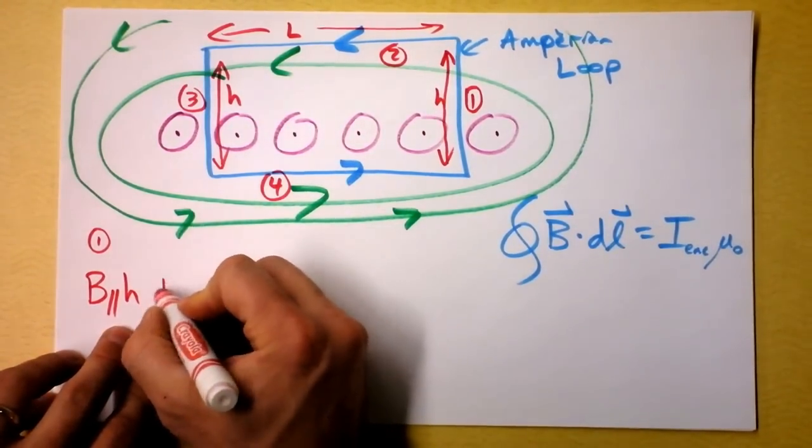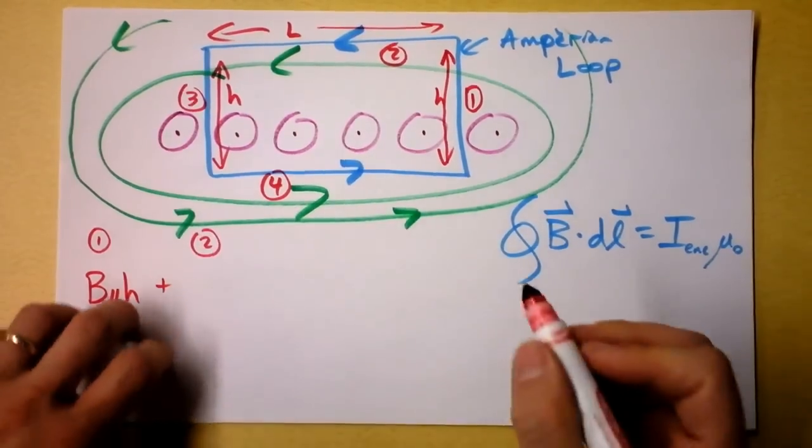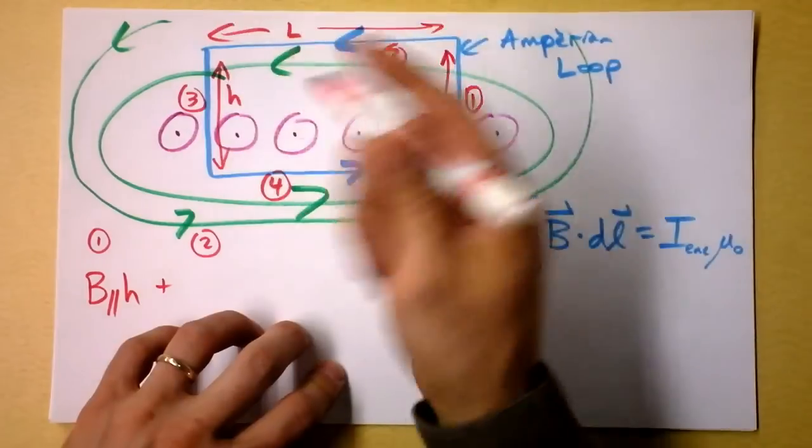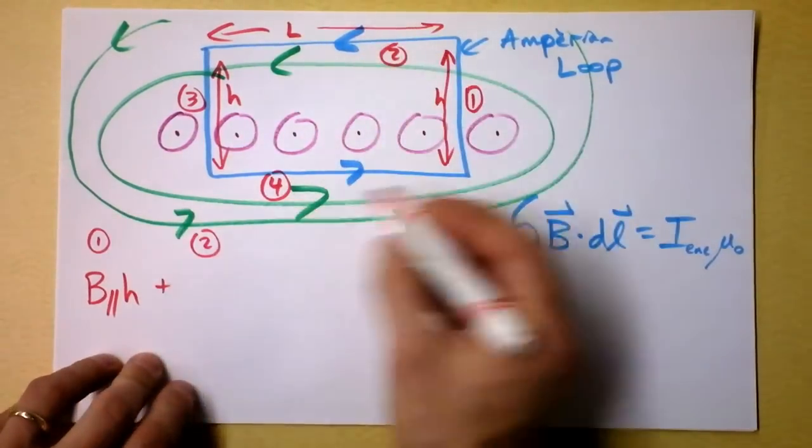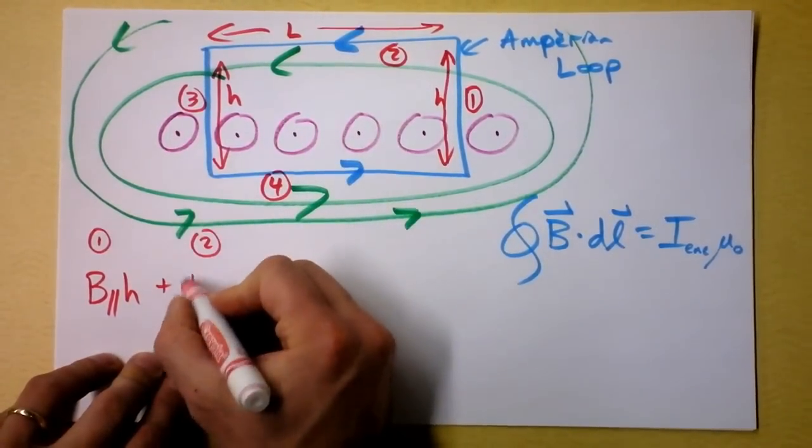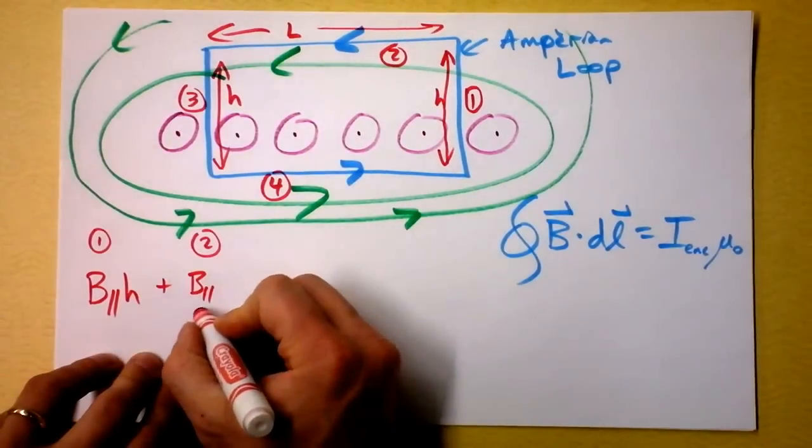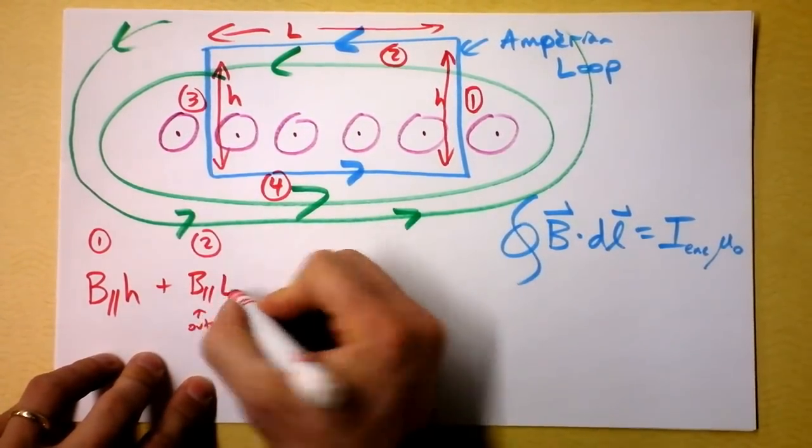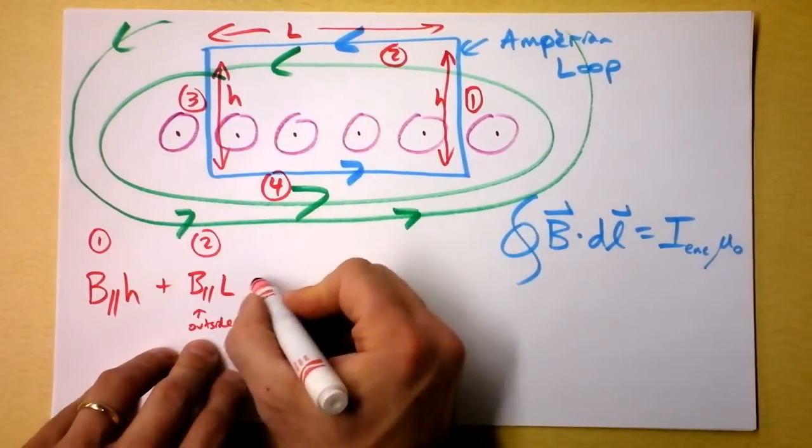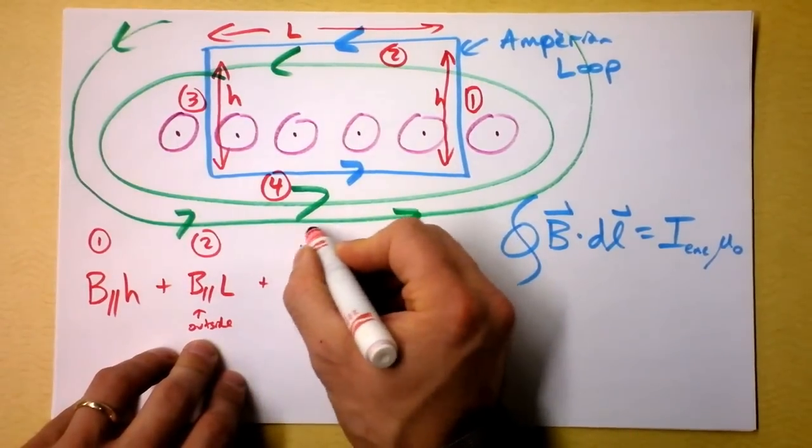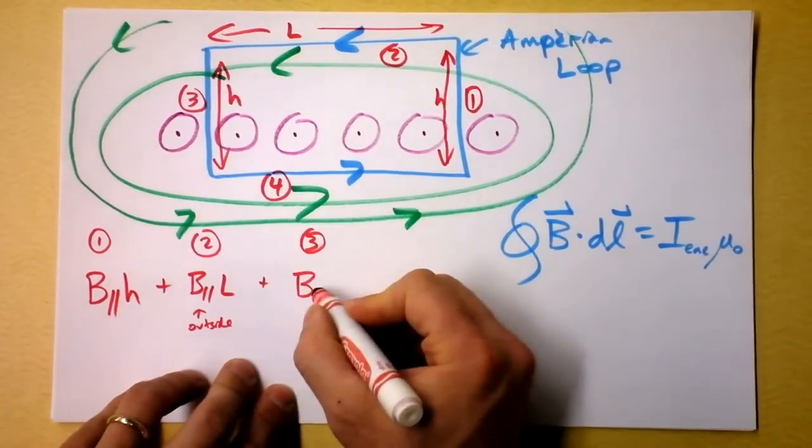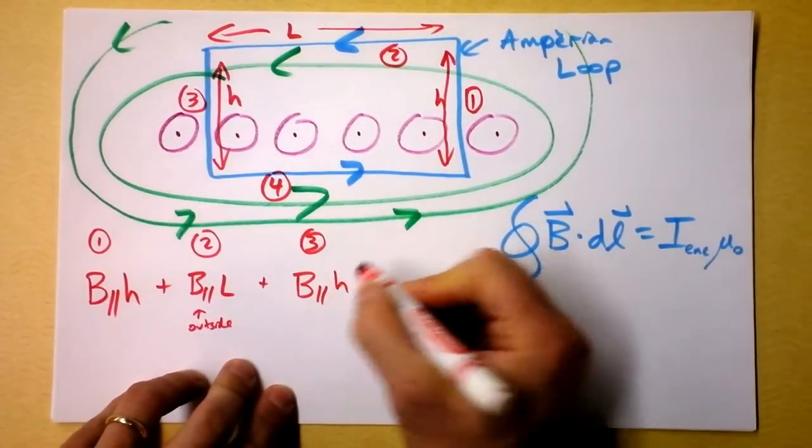And then I'm supposed to add on the contribution from loop two, and that's when I can make this so arbitrarily large that the field becomes zero out there. So then I'm going to say B parallel outside of the solenoid times L.